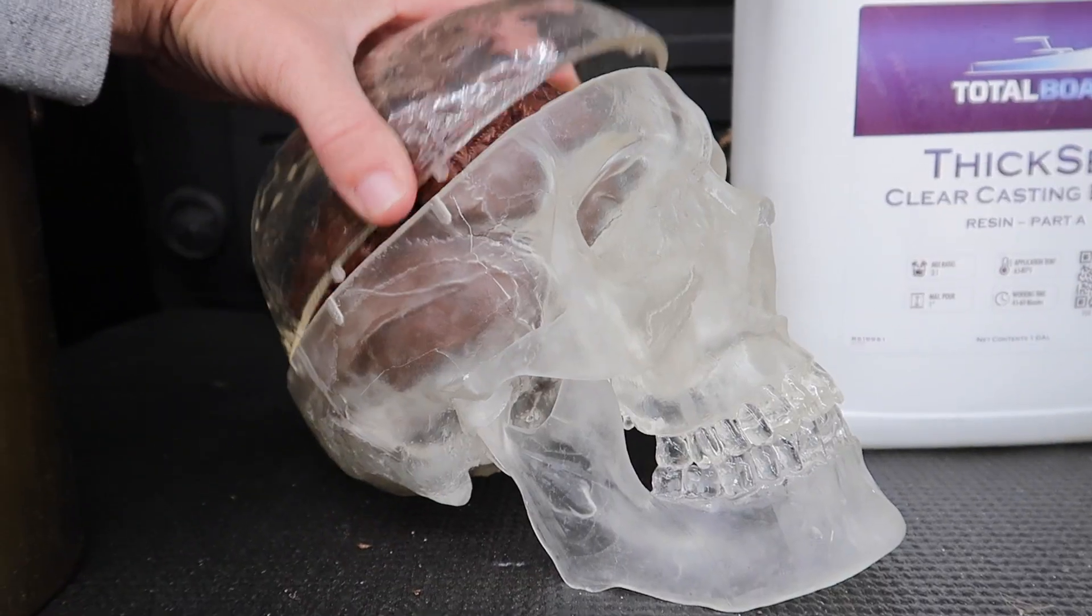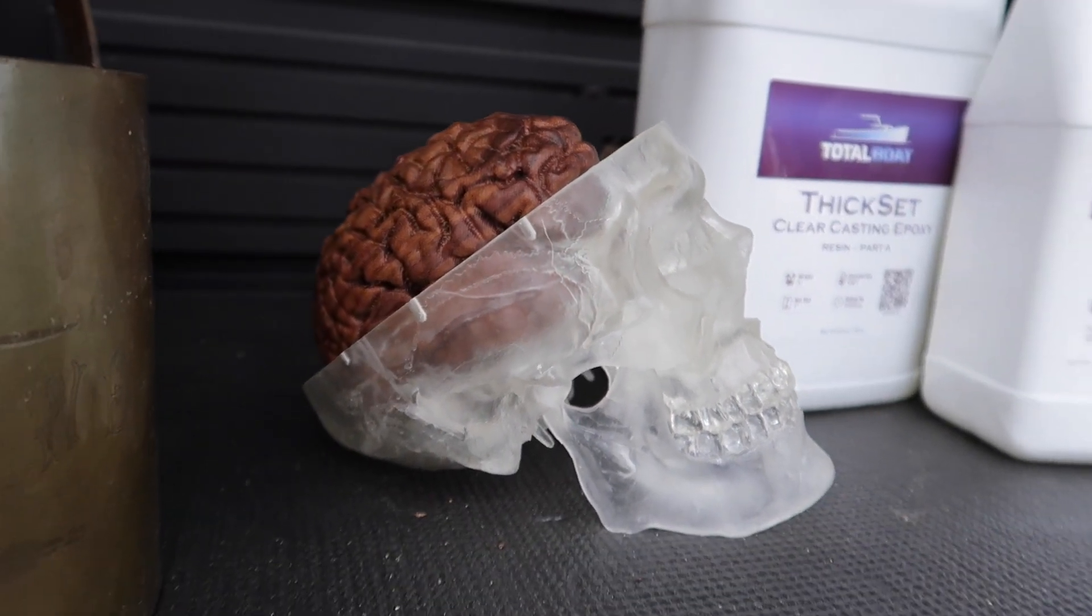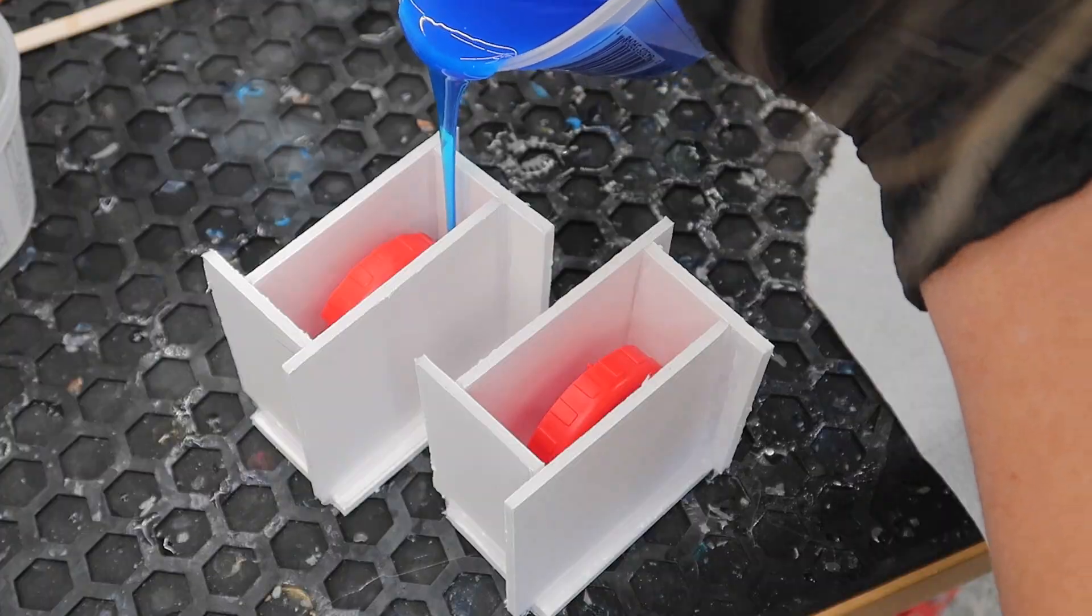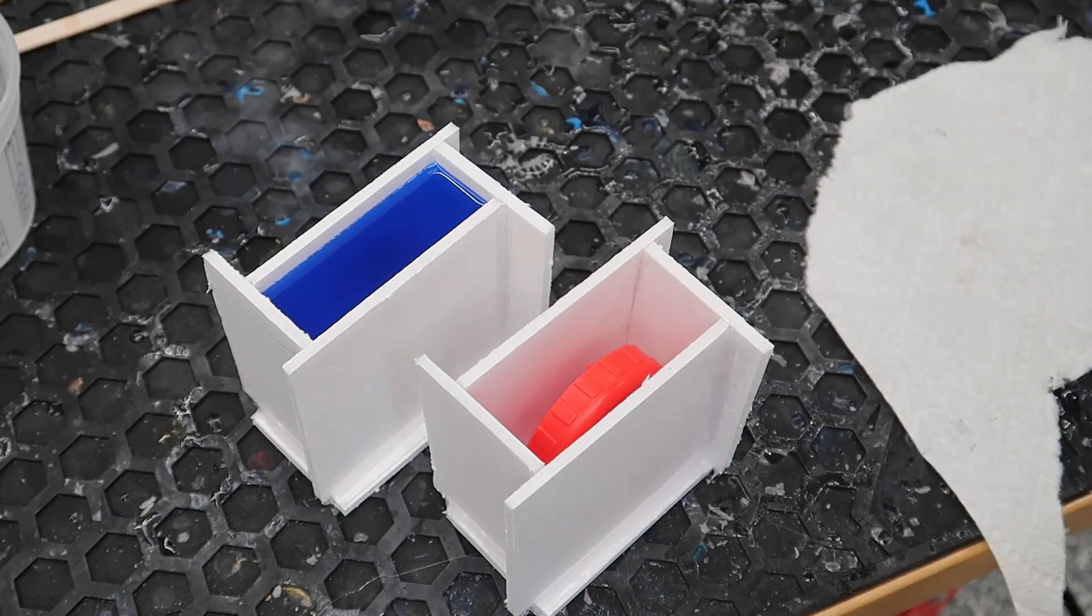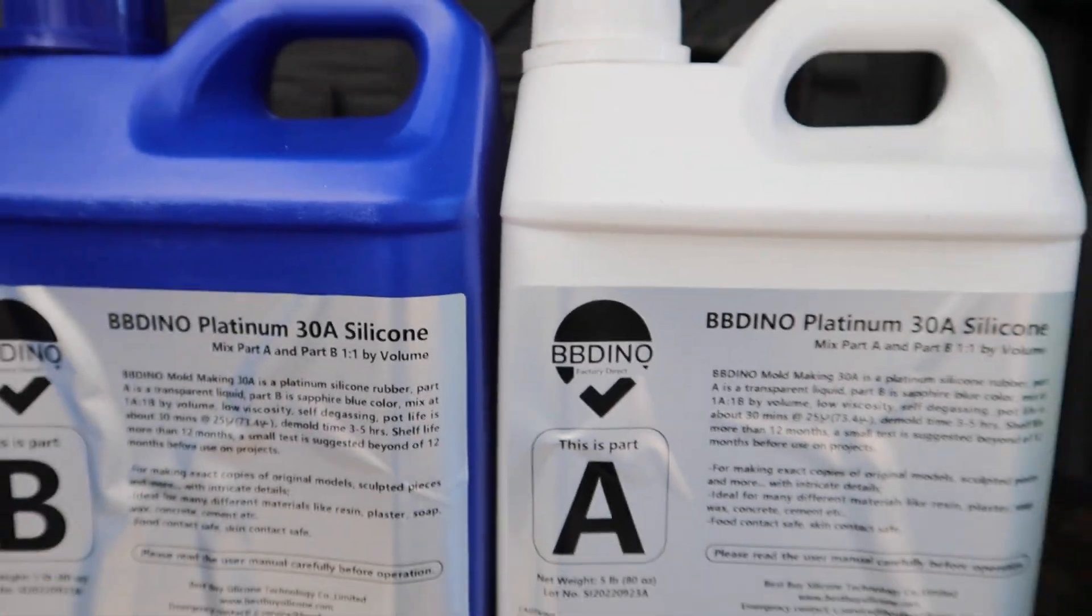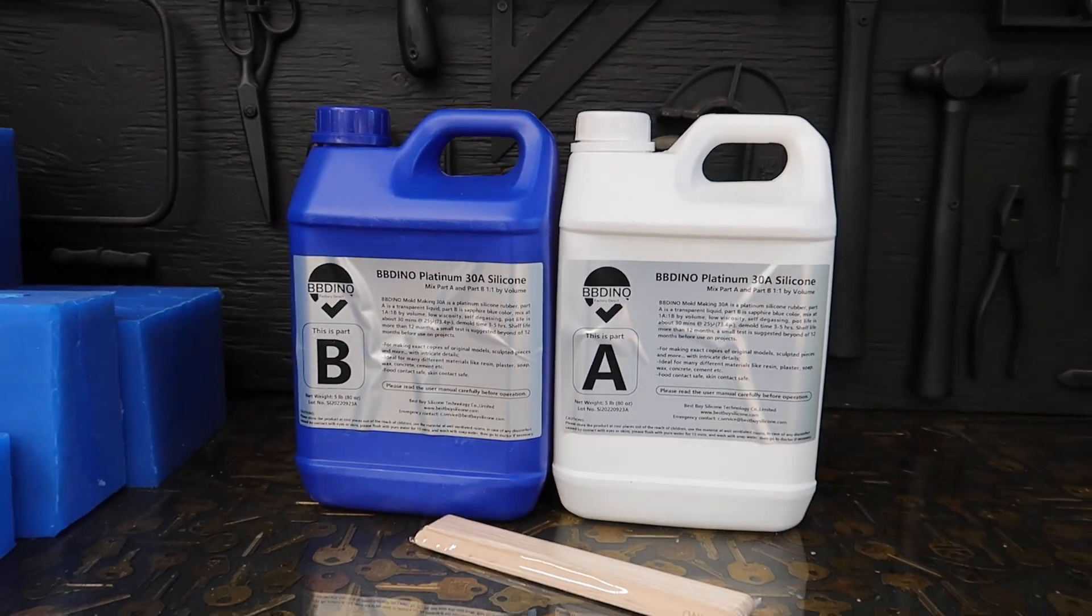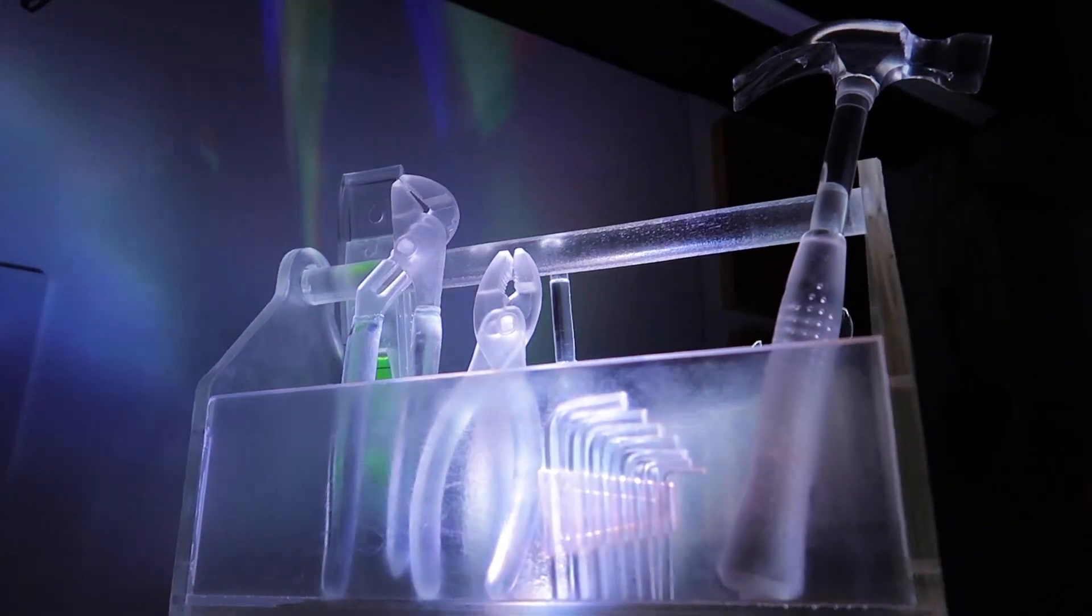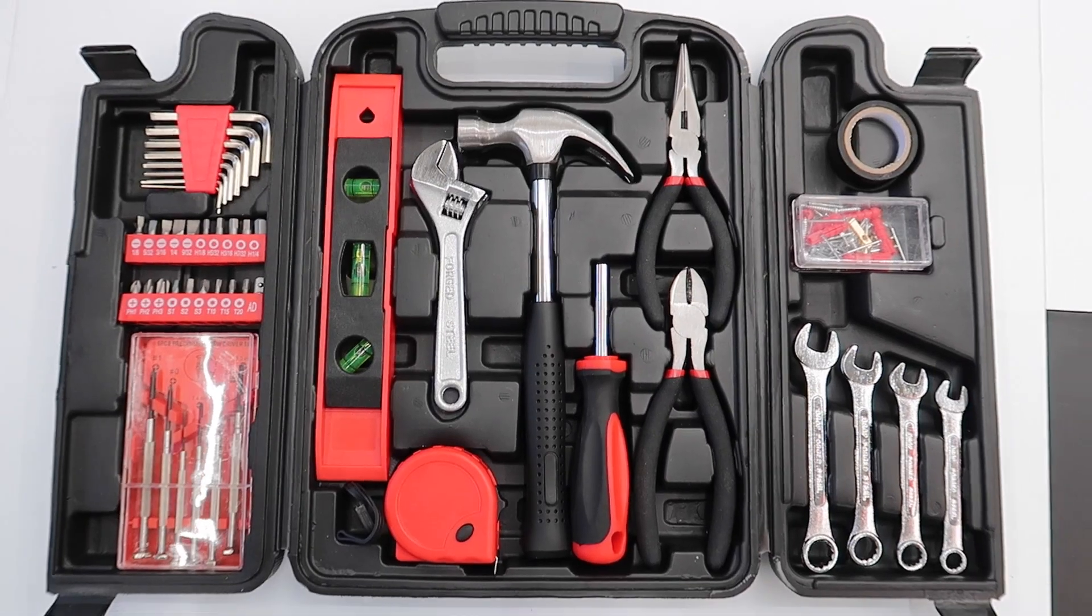Friends, I'm really excited about this project. My last video where I made the clear epoxy stools with the wood brains to go inside got me really excited about silicone mold making. I've teamed back up with my good friends over at BB Dyno to use their platinum silicone as well as my good friends over at Total Boat to use their thick set clear casting epoxy.